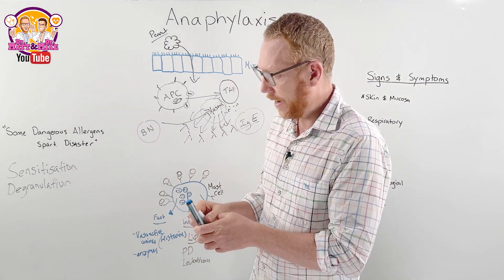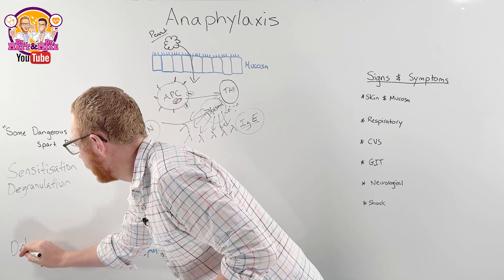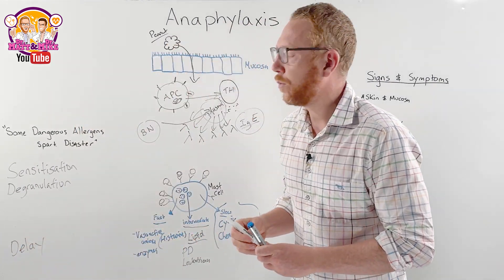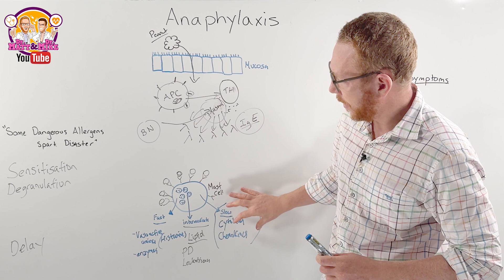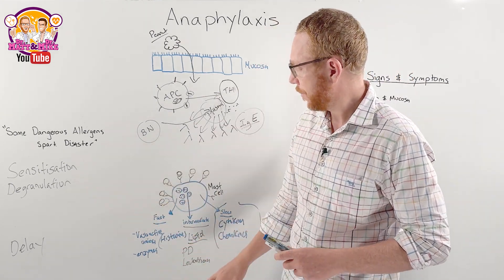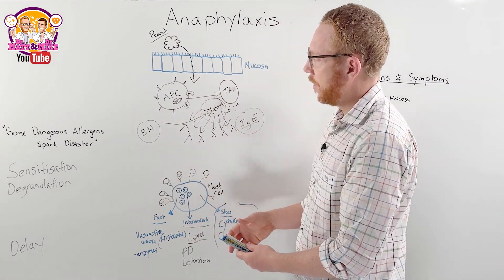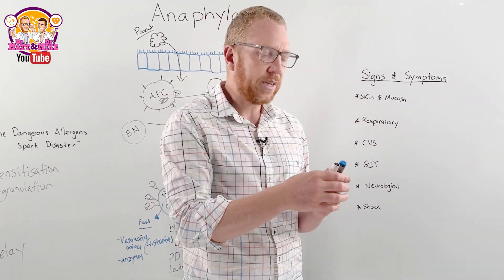And this is going to be the second D down here, and that's going to be delay. So there's going to be a delay associated with anaphylaxis, which is because these chemicals are coming up much later than the degranulation that we saw here. So now what we can do, once we now know all the chemicals involved, we can now see what symptoms we expect to see.